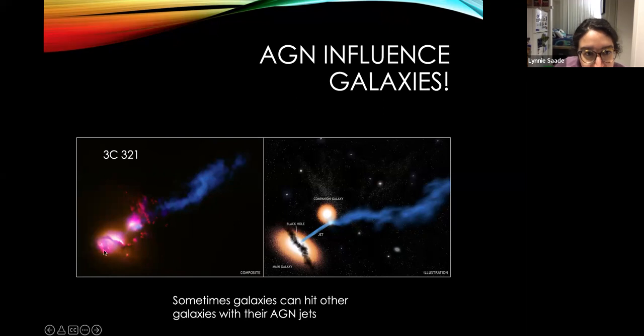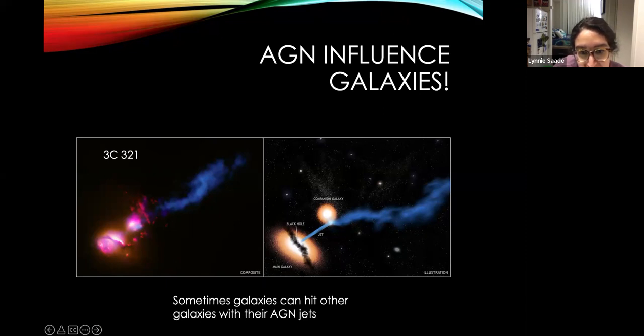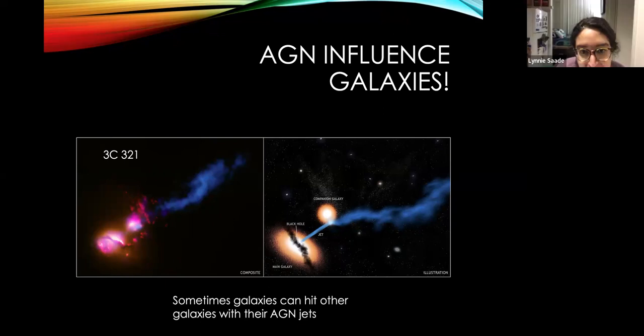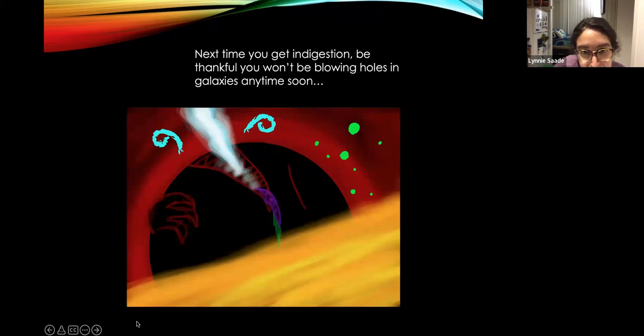And we can even sometimes see the galaxies that have AGN in them impacting other galaxies. This is 3C321 or it's sometimes called the Death Star Galaxy because the black hole in this galaxy is launching a jet that's hitting another galaxy and causing it to suffer being irradiated from all that energy. So sometimes AGN don't just influence the galaxies that they're in, they can influence the evolution of other galaxies. So basically black holes can eject gas in such a powerful manner that they can impact galaxies and even whole clusters of galaxies. So the next time you have indigestion, just be thankful you're not going to be blowing holes in galaxies anytime soon. You're definitely not like a supermassive black hole.